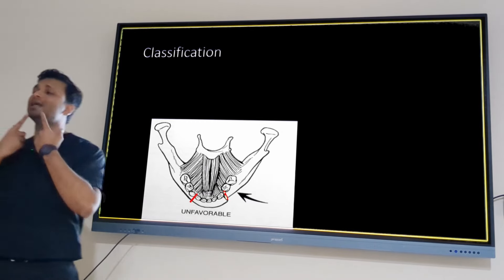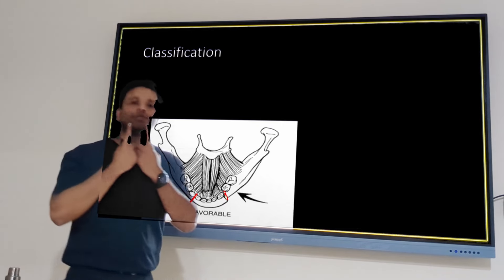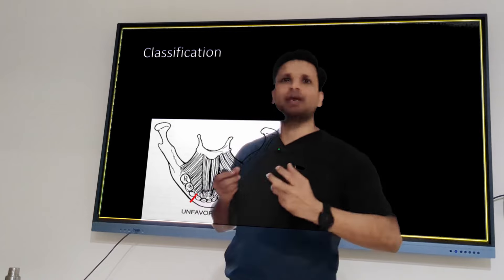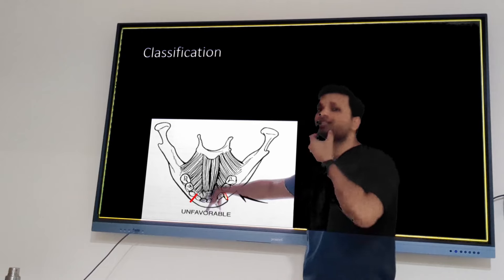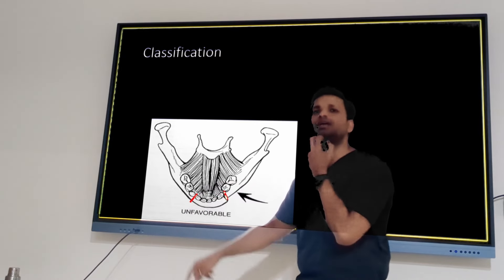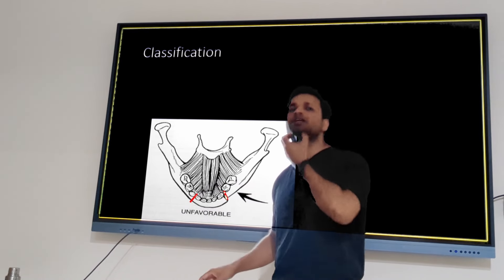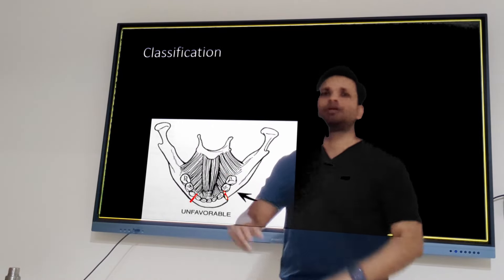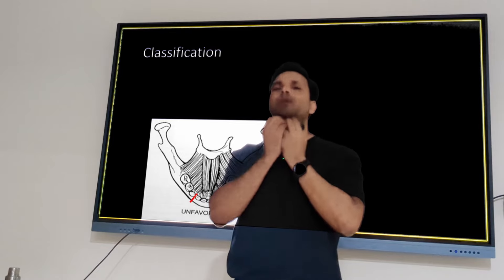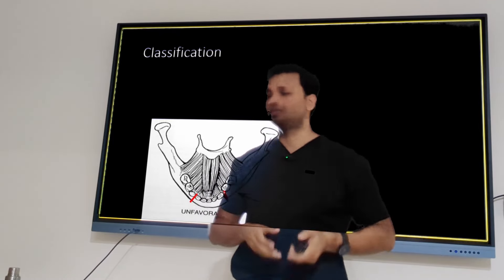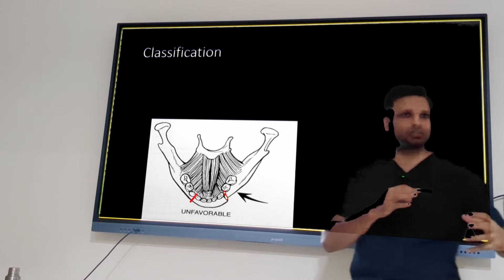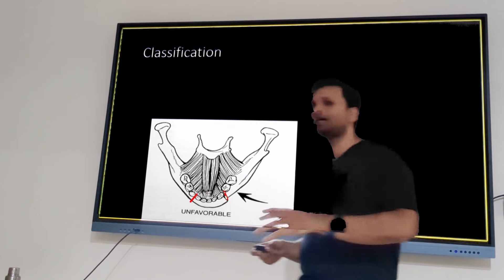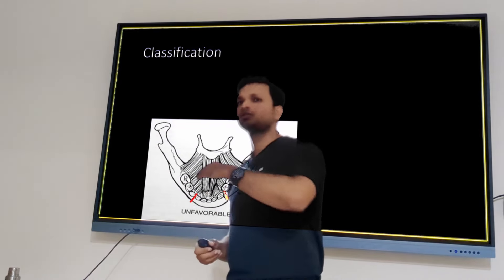In bilateral parasymphysis fracture, the genioid muscles and anterior belly of digastric pull the central segment downward and backward. The tongue is attached to the mandible via the genioglossus muscle, so as the segment moves backward and downward, the tongue falls back. In an unconscious patient this causes airway obstruction and can be life-threatening. In any trauma management, securing the airway is always the first priority.